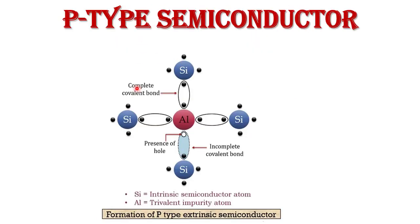Now, P-type semiconductor. When a trivalent impurity is added to an intrinsic or pure semiconductor such as silicon or germanium, it is called a P-type semiconductor. In trivalent impurity atoms, there are three valence electrons in the outermost orbit. Trivalent impurity atoms such as boron, gallium, indium, and aluminium are known as acceptor impurity atoms.